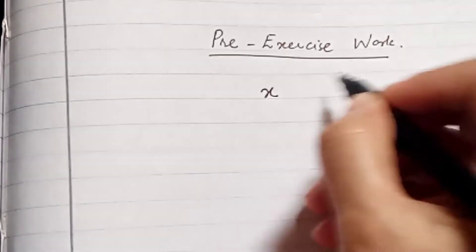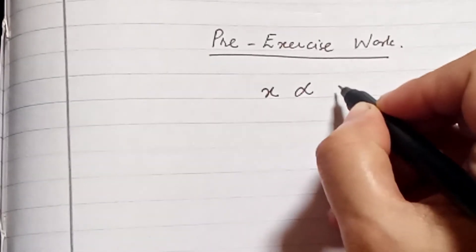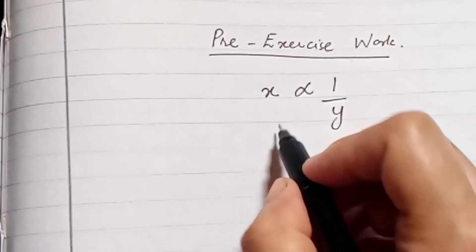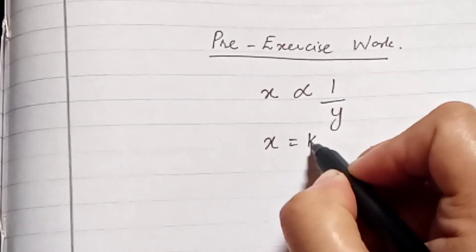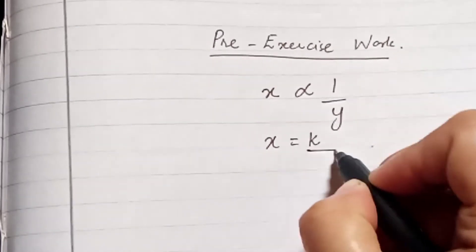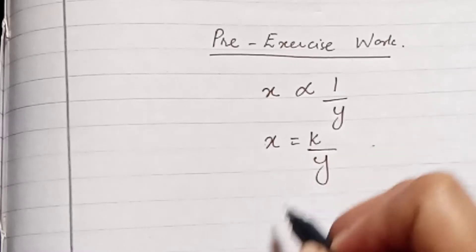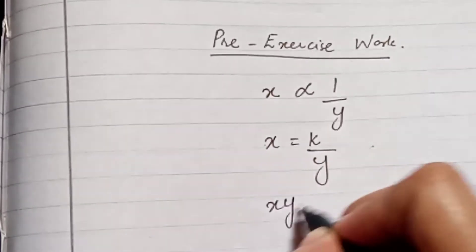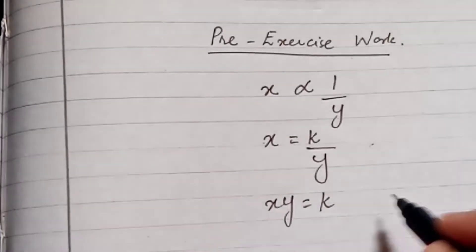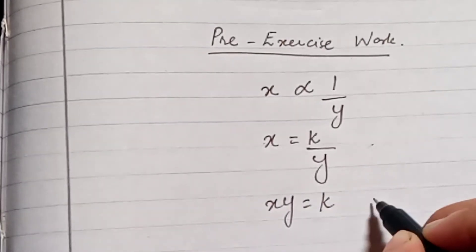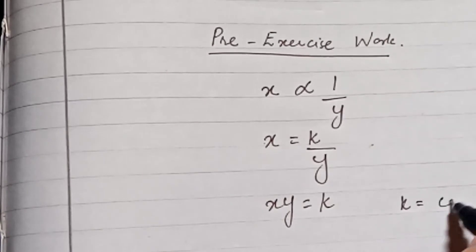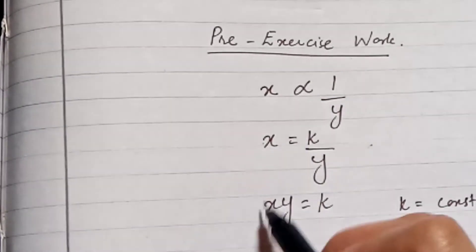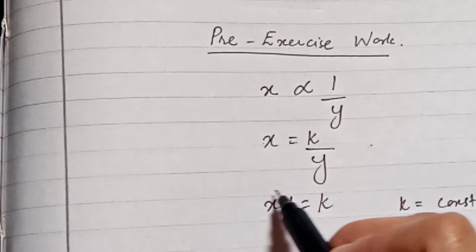If x is inversely proportional to y, we write x equals k upon y, and moving y to the other side gives x·y equals k, where k is a constant.